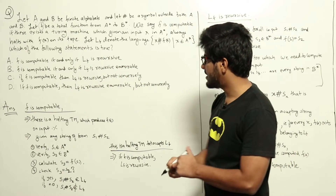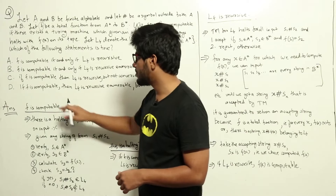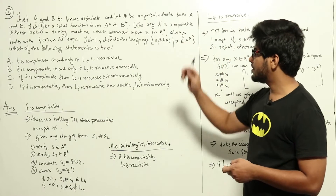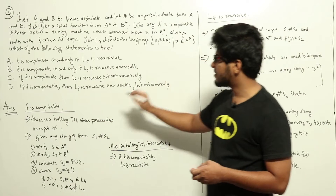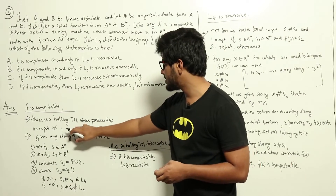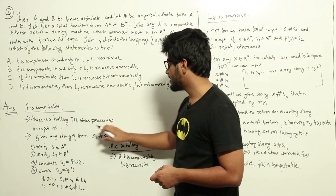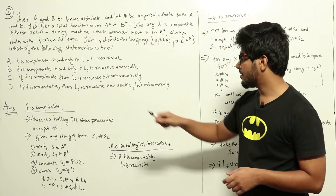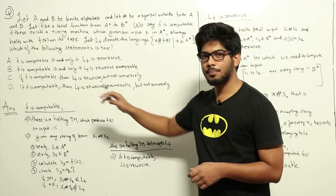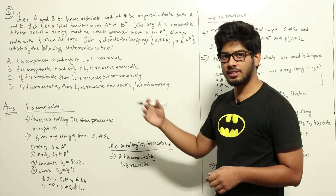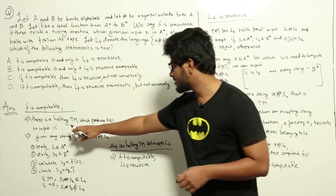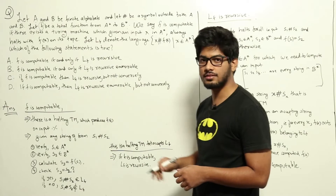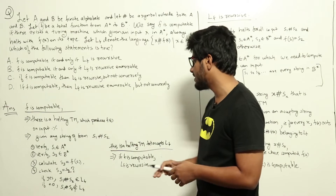Let's start with the assumption that f is computable. From the definition, we know there is a halting Turing machine that can produce f(x) on input x. So if f is computable, there is a Turing machine to which we can input x and which will output f(x). We can calculate f(x) easily.